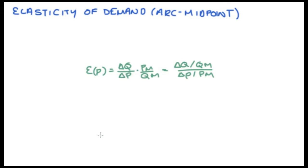The important thing to note is that when we're using the arc or the midpoint elasticity formula, it's only going to be concerning situations where we have discrete changes in the variables. So that's if things are moving between two different points.